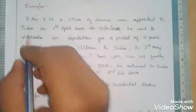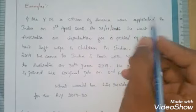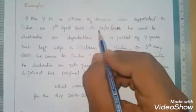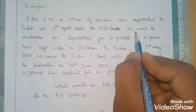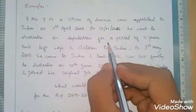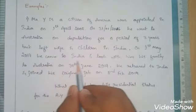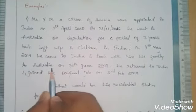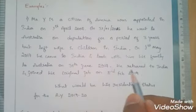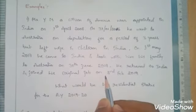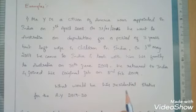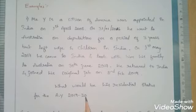Now let us look at some examples. The first situation: Mr. Y is a citizen of America, appointed in India on 1st April 2008. On 31st January 2016, he went to Australia on deputation for a period of three years but left his wife and children in India. On 1st May 2017, he came to India and took his family to Australia. On 30th June 2017, he returned to India and joined his original job. On 2nd February 2019, what would be his residential status for the assessment year 2019-20?